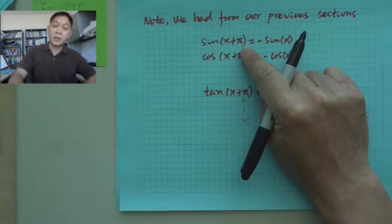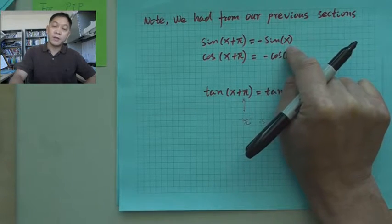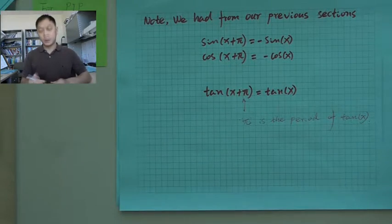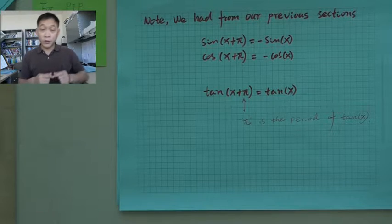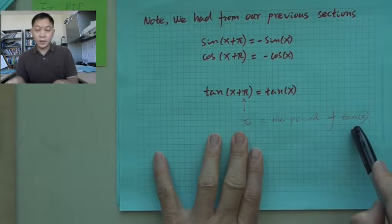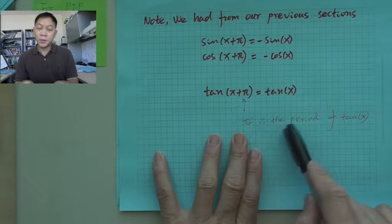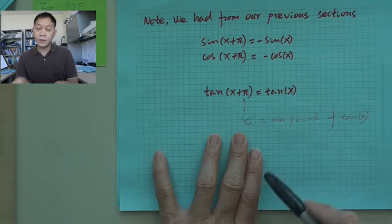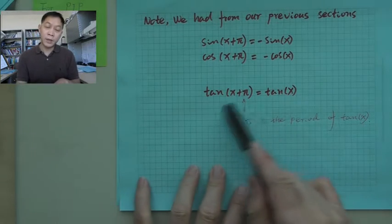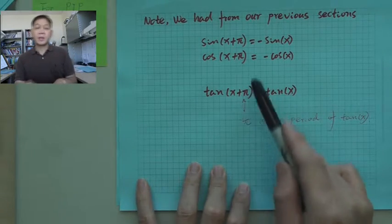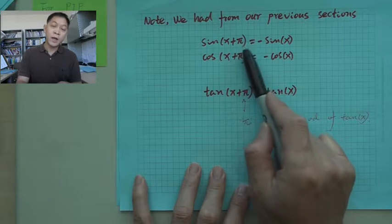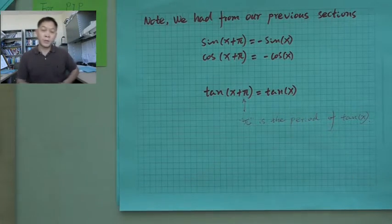Sine x plus pi is negative sine x. Cosine x plus pi is negative cosine x. And tangent x plus pi is tangent x. The reason is that pi is the period of tangent x. But if you add pi inside sine cosine, that's only half period, so you have a negative.